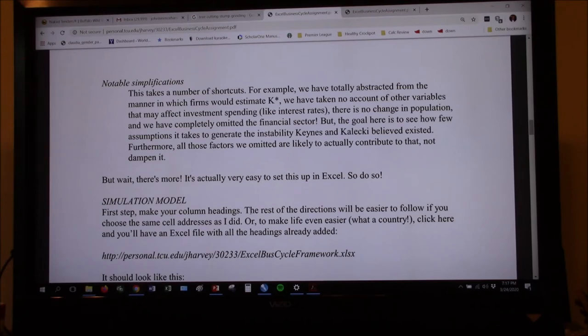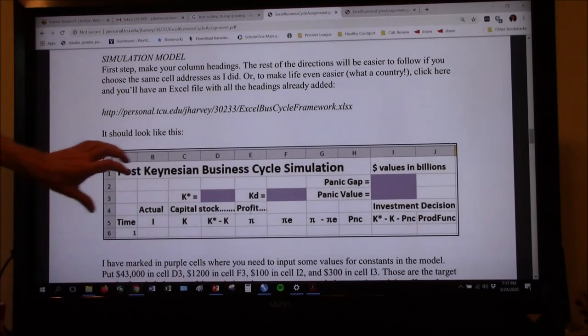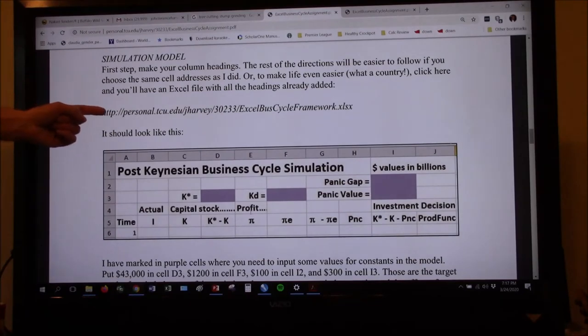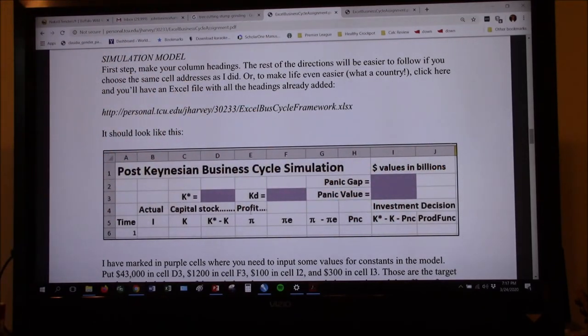But wait, there's more. It's actually very easy to set all this up in Excel, so do so. Now, I had a good idea this semester. Well, I guess before the semester started, I thought, hey, in my original instructions, I was telling people, type all this out. And then I thought, why don't I just give you that to start with? So when you click on this, it will give you this much of the Excel spreadsheet already. It's already labeled for you. So that's kind of handy. So first, if you want to make your column headings, the rest of the directions will be easy, easier to follow if you choose the same cell addresses as I did. Or to make life even easier, click here and you'll have an Excel file with the headings already added. So I'm going to do that now as if I were a student, as if I did not already have a college degree.